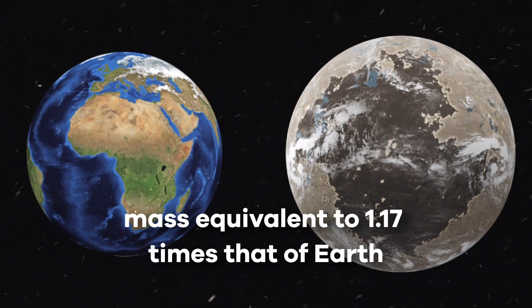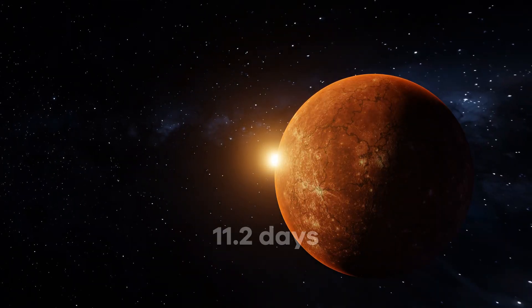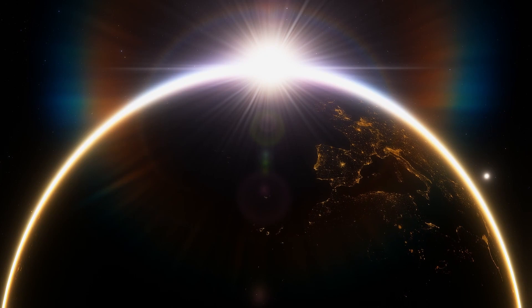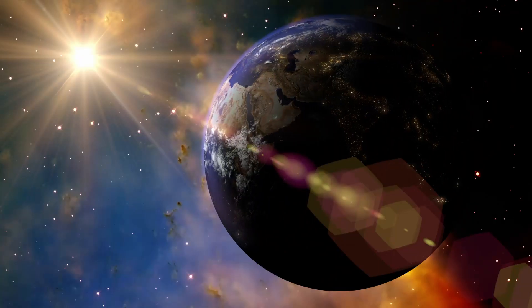Proxima b has a mass equivalent to 1.17 times that of Earth. It completes an orbit around its star in just 11.2 days, in contrast to Earth's year-long orbit around the Sun.